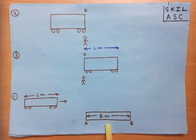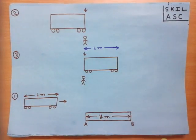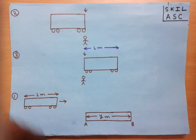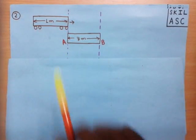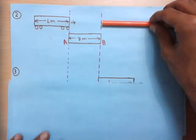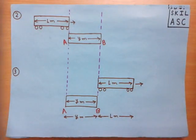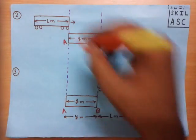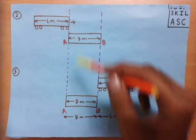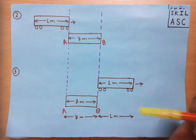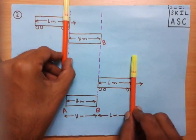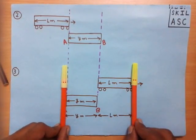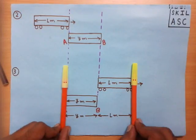Now suppose instead of the man, we have a platform of length Y meters, where one end is A and the other end is B. A train of length L meters is moving towards the platform. When the front of the train comes in line with A, the train starts to pass the platform. It keeps passing until the back of the train comes in line with B — at that position, the train has completely passed the platform. The distance between the two front positions of the train is Y + L meters, where Y is the length of the platform and L is the length of the train. So to pass a platform, the train has to cover a distance equal to its own length plus the length of the platform.